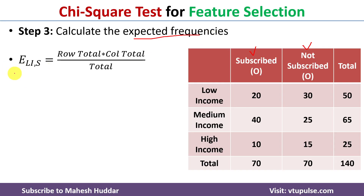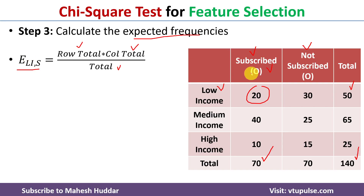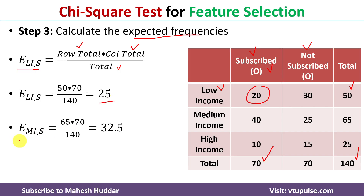To calculate the expected frequency, we use this formula: expected frequency equals row total multiplied by column total, divided by the grand total. For example, the expected frequency of low income given subscribed is: row total (50) multiplied by column total (70) divided by grand total (140), which equals 25. Similarly, the expected frequency of medium income given subscribed is: row total (65) multiplied by column total (70) divided by 140, which equals 32.5.